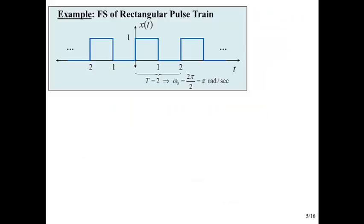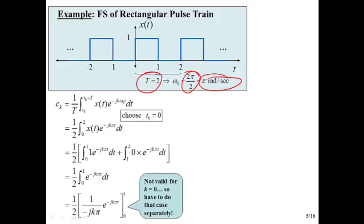Okay, let's look at an example. Here's a nice rectangular pulse train. Period is equal to 2. Our fundamental frequency, 2 pi over the period, gives us pi radians per second. So that's our fundamental frequency. Again, these are textbook-type values. Real-world signals are going to have periods that are probably much smaller than a second, like milliseconds, microseconds, nanoseconds, and things like that.